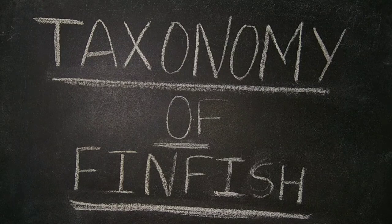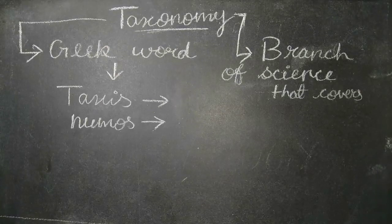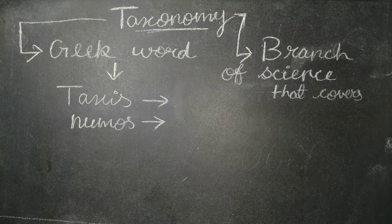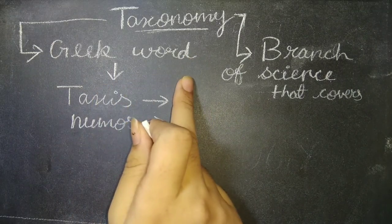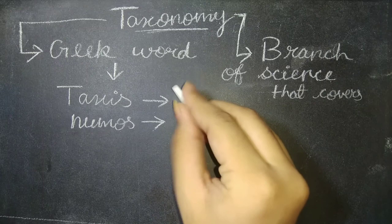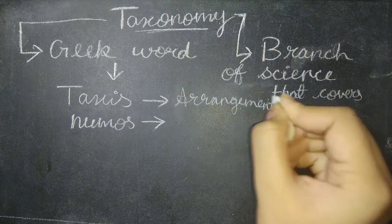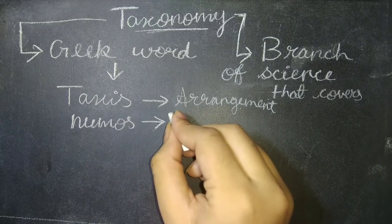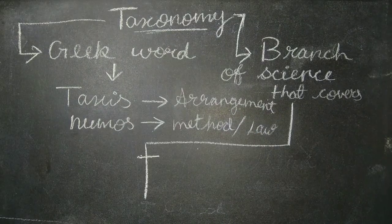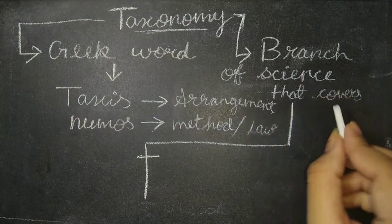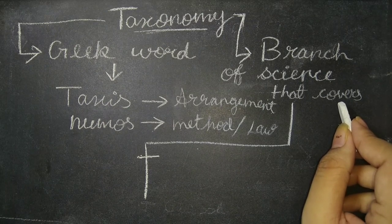We will also learn why this taxonomy subject is important for us in this fisheries course. Let's first discuss about the taxonomy. Taxonomy is a Greek word in which taxon means arrangement and nomos means method or law. Taxonomy is a branch of science that covers the classification, identification, and nomenclature of an organism.